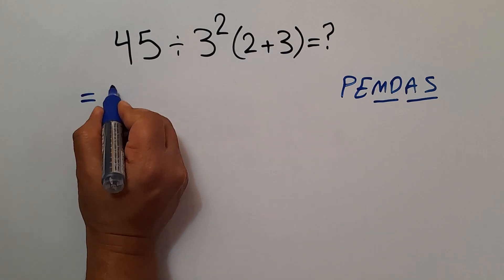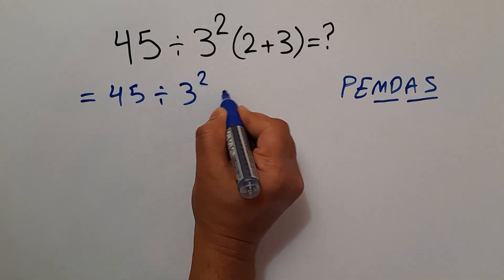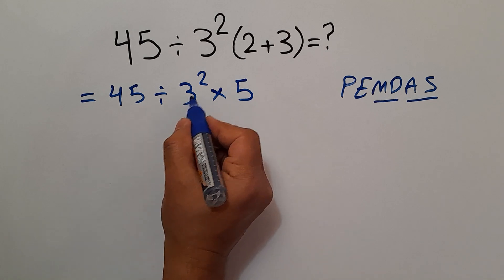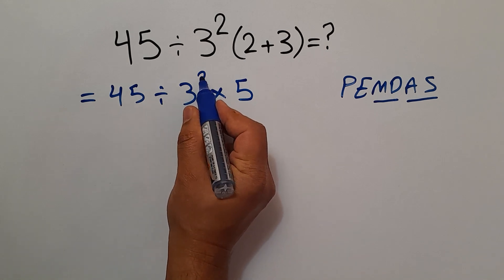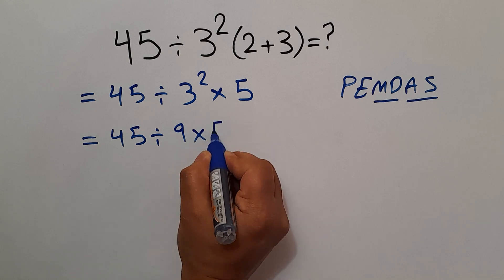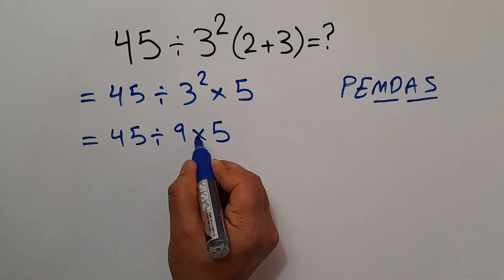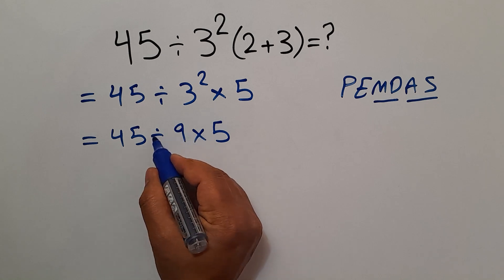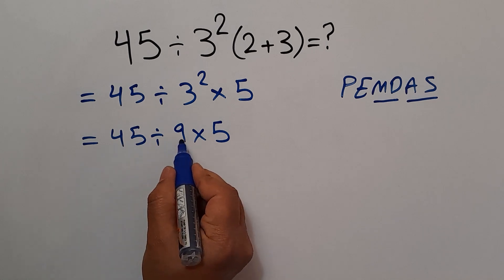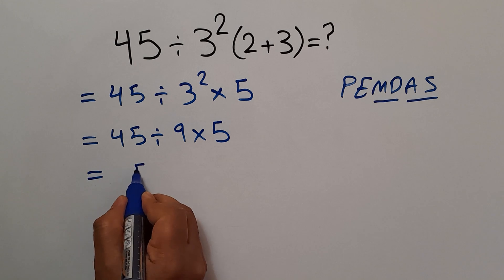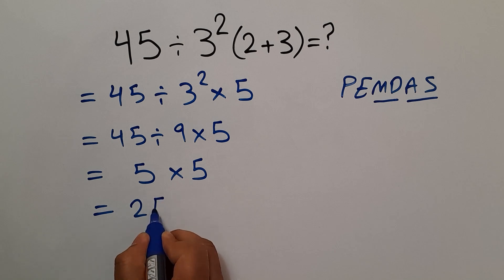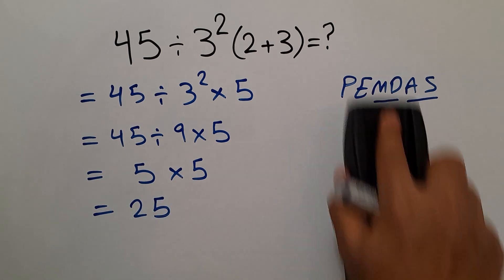So first we handle the parentheses: 2 plus 3 gives us 5. Our expression becomes 45 divided by 3 squared times 5. Now we handle the exponent: 3 squared gives us 9. So we have 45 divided by 9 times 5. Division and multiplication have equal priority so we work left to right: 45 divided by 9 equals 5, then 5 times 5 equals 25. Our final answer is 25.